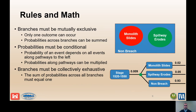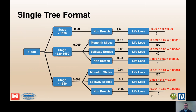The probabilities for each branch must be conditional on all preceding branches. In other words, the probability of an event depends on all events along pathways to the left in the event tree. The total probability of a particular chain of events, or pathway through the event tree, can be obtained by multiplying the sequence of conditional probabilities. Probabilities across branches are summed and the sum must equal one. Probabilities along pathways are multiplied for each end branch.